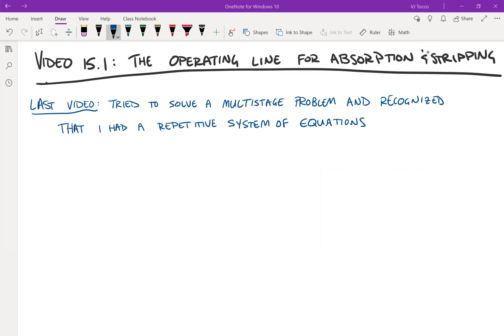So because the operating line is linear, just to remind you again, the equilibrium line is of the form y equals Henry's law constant divided by pressure times x. This is linear.